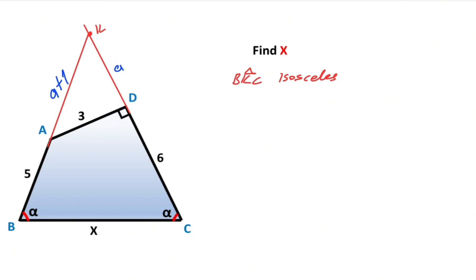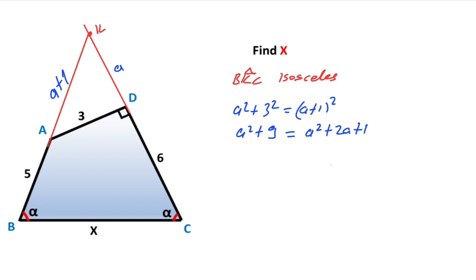For this triangle, if we apply the Pythagorean theorem we get the value of a. Therefore: a² + 3² = (a + 1)². Expanding: a² + 9 = a² + 2a + 1. This gives 2a = 8, meaning a is going to be 4 units.